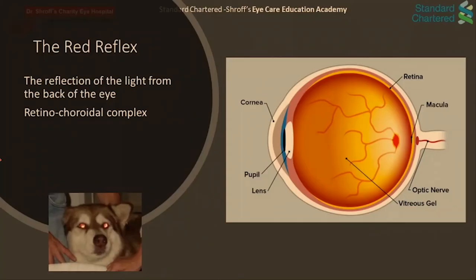The red reflex is the reflection of light from the back of the eye. Since the retinochoroidal complex is red in color due to the abundance of blood vessels, the reflected light from it is also red in color. This red reflex can be seen commonly in animals such as cats and dogs at night when a headlight of a vehicle shines on their dilated pupils.